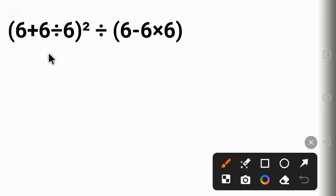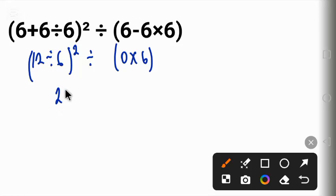At a glance, you will be tempted to go left to right. That is, 6 plus 6 will give us 12, divided by 6 raised to power 2, divided by 6 minus 6 will give us 0 times 6 in parenthesis. Now 12 divided by 6 will give us 2.